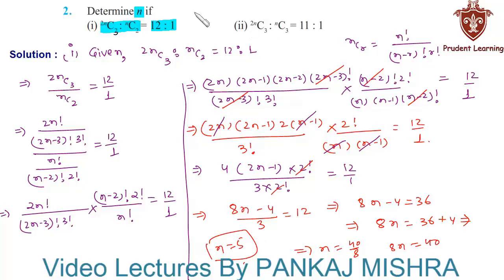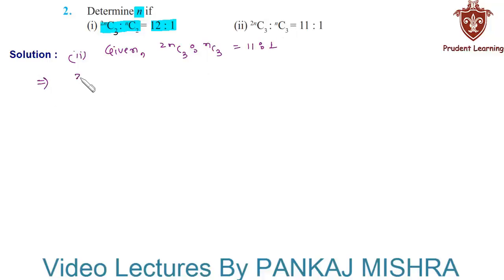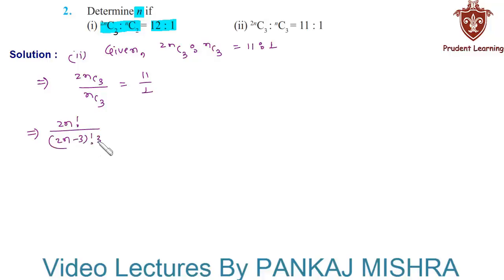Let us now move on to the second section. In the second section we are given that 2nC3 is to nC3 is equal to 11 is to 1, and we are required to find the value of n. The left hand side can be written as 2nC3 over nC3 is equal to 11 over 1. Now we can write 2nC3 as 2n factorial over (2n minus 3) factorial into 3 factorial, by the relation nCr is equal to n factorial over (n minus r) factorial into r factorial.